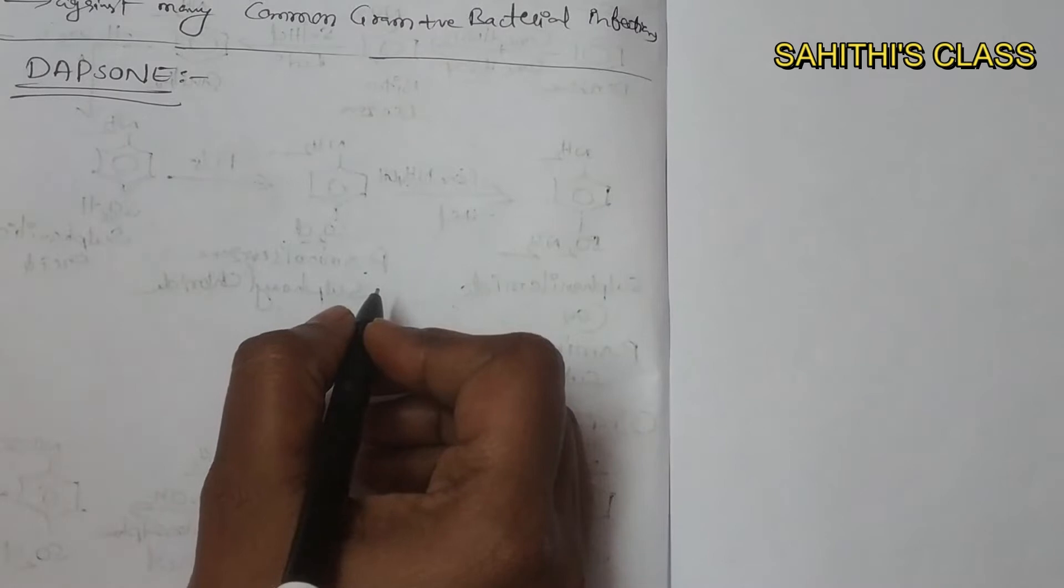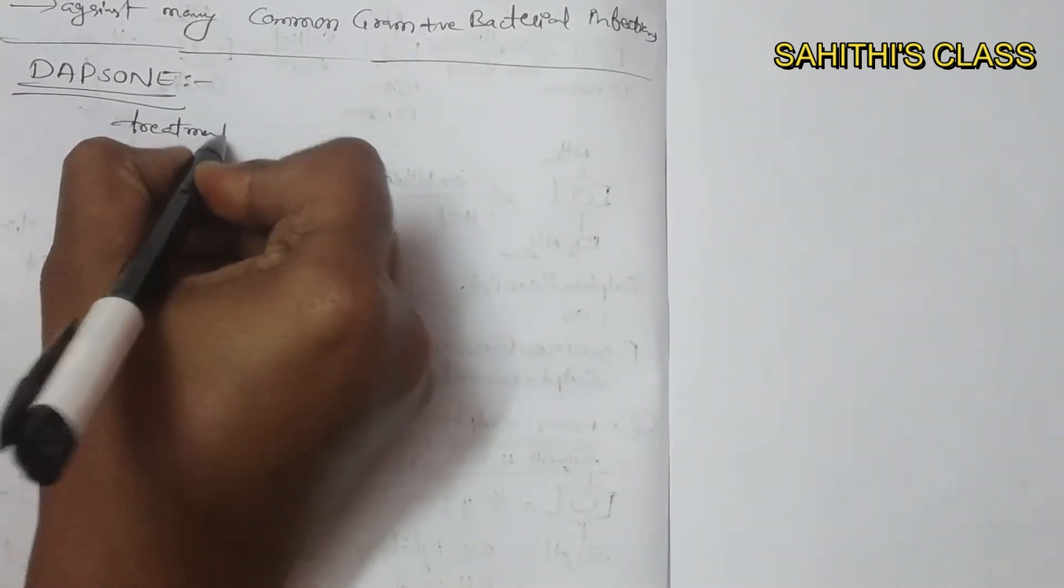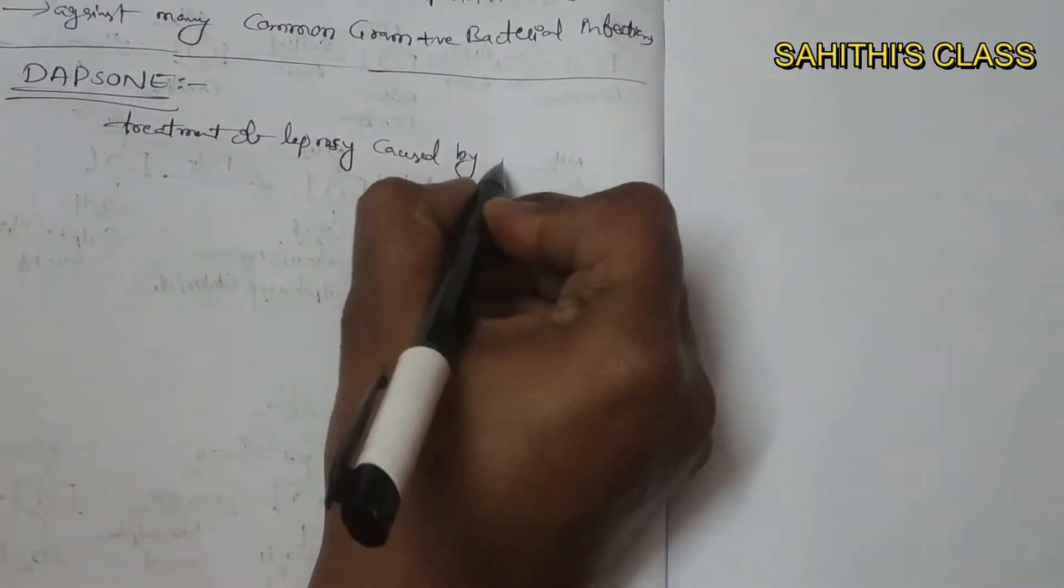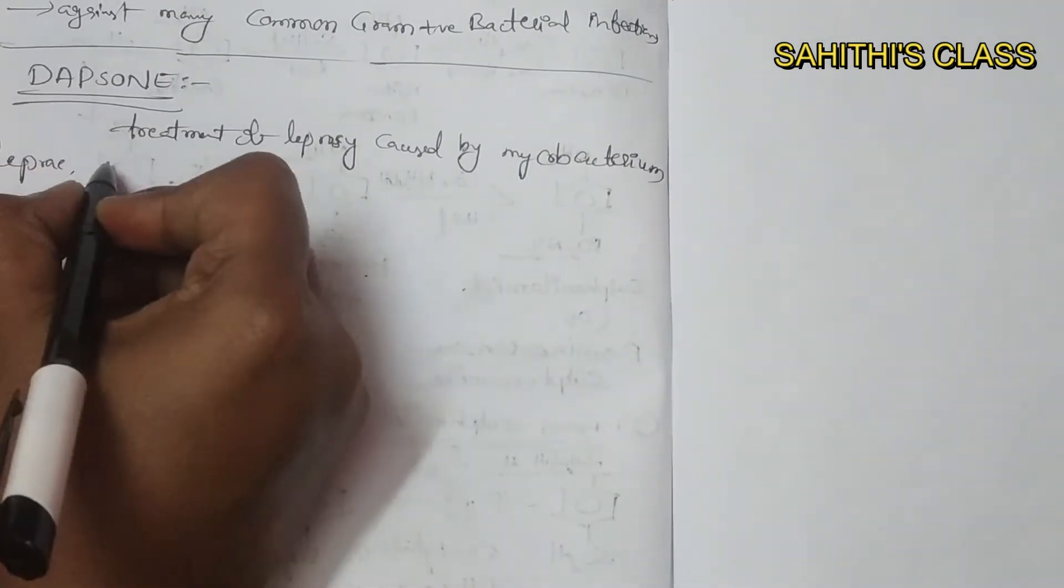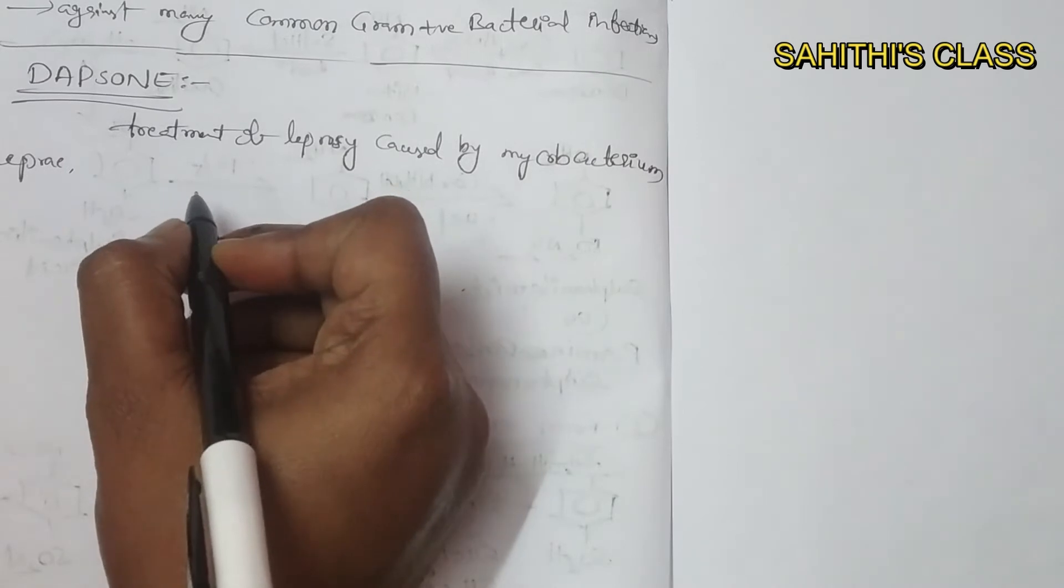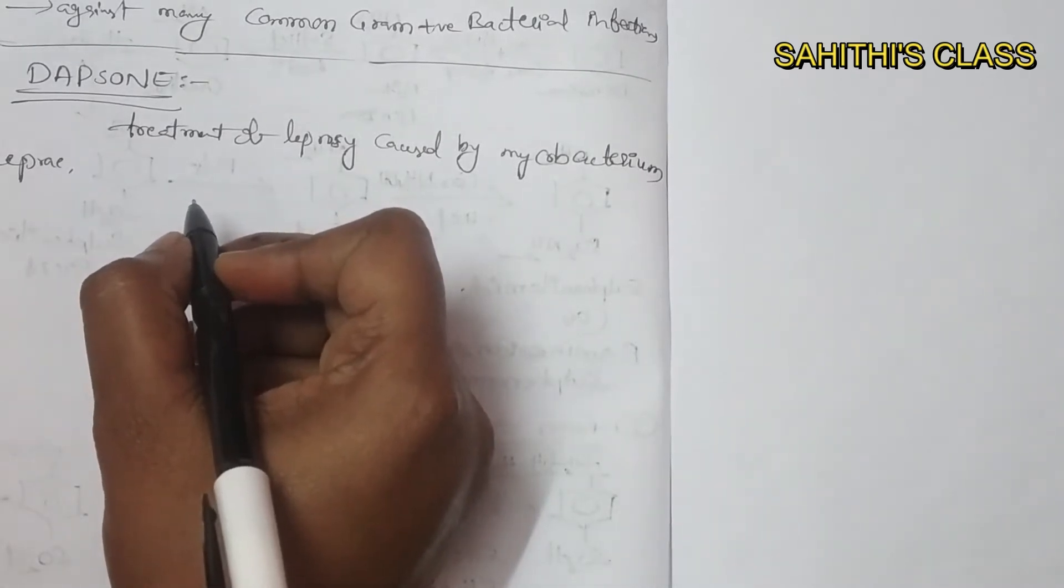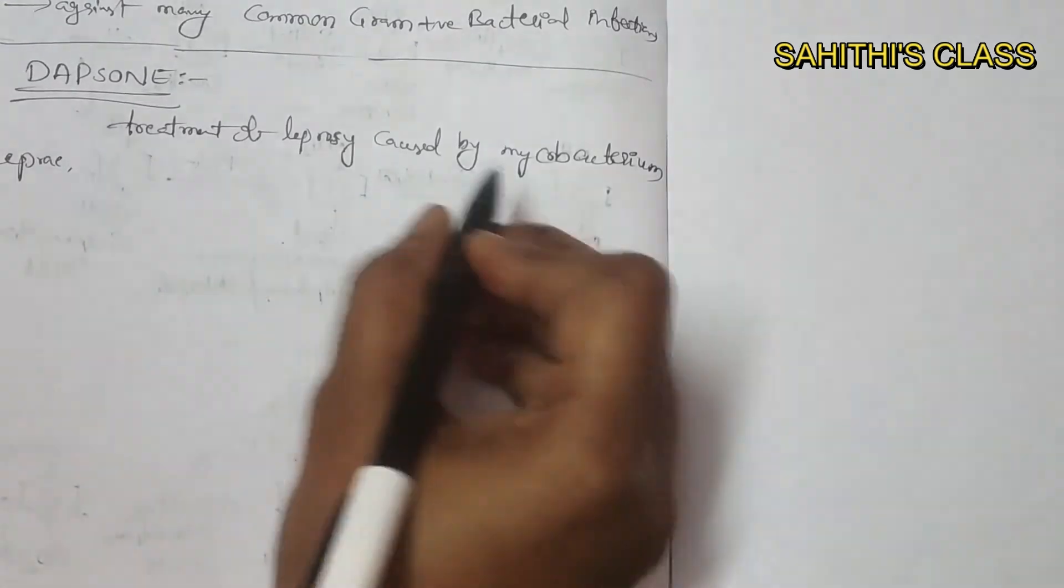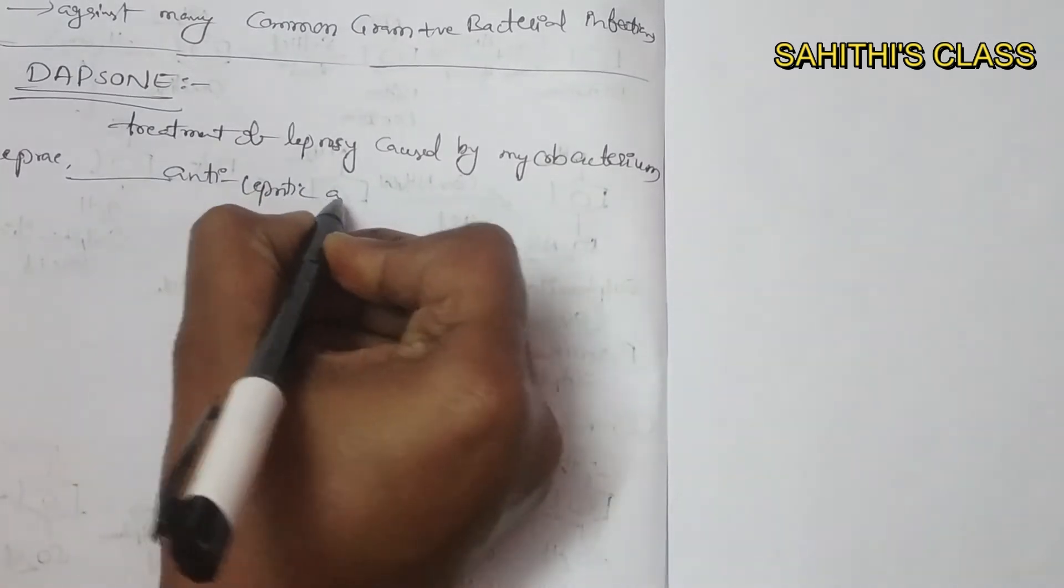Dapsone is an anti-leprosy drug. That means it is used in the treatment of leprosy. It is caused by mycobacterium leprae. Leprosy which has been considered as an incurable disease since ages and the basis of social stigma for the past centuries. It has been used as a weak anti-leprosy agent in Indian medicine. So now we use dapsone as a drug for the purpose of anti-leprosy agent.